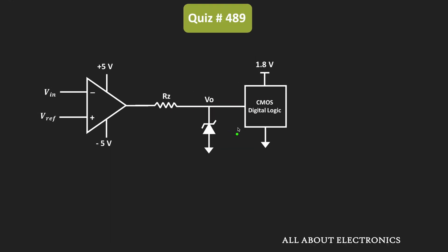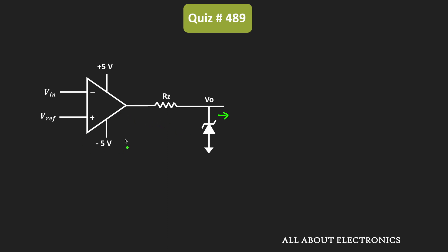The input impedance of this CMOS logic circuit is infinite, which means from the Zener diode side it will act as an open circuit. This Zener diode will work in the breakdown region whenever the output of this op-amp is equal to 5V. In this condition, the voltage across this Zener diode will be equal to 1.8V. And based on the value of resistor RZ, some current will flow through this Zener diode.